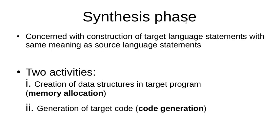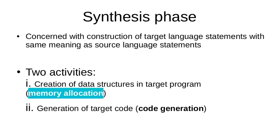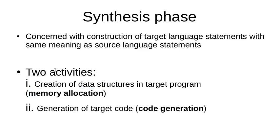The synthesis phase must mandatorily perform two activities. The first one is the creation of data structures in the target program, which is also known as memory allocation. Whatever data variables and identifiers are used in the target program require some memory space to be allocated. So memory allocation is the first job of the synthesis phase. The second job is the generation of the target code itself, known as the code generation step.